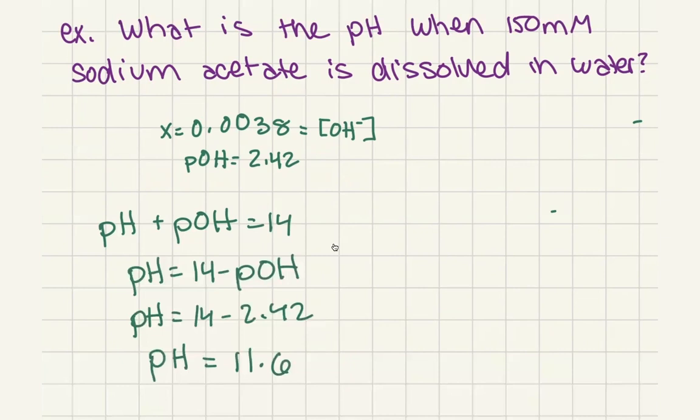Does this make sense? We would expect a high pH because we're adding a base, and indeed we get a pH of about 11.6. Even though we weren't dealing with an acid directly, we can still calculate the pH by remembering that pH plus pOH equals 14 and that pKa plus pKb equals 14.